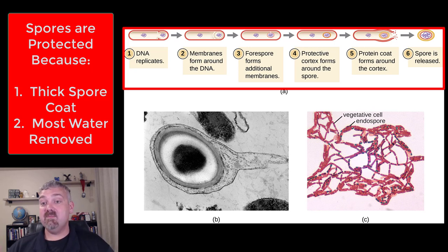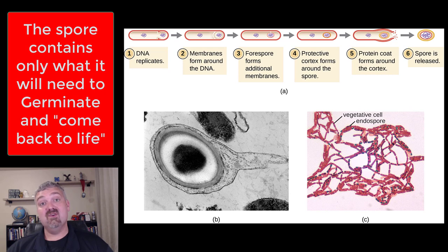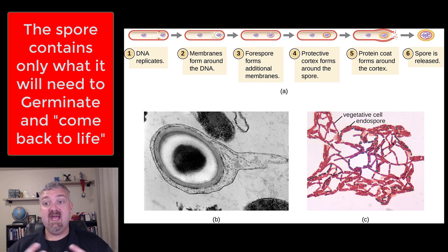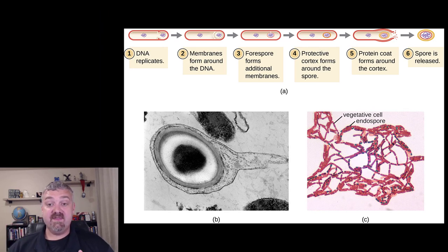The spore is not an entire cell. It only contains the ingredients needed to wake back up and resume metabolic activity — there's DNA in it, a little bit of RNA, a handful of enzymes, a couple of small molecules, and that's it. It's only enough to turn the machinery back on to create a living vegetative cell again when the environment improves.